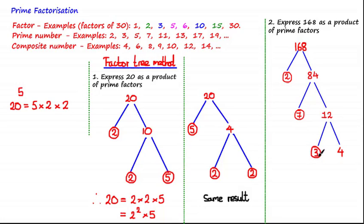7 is circled as it's a prime number. 2 factors which multiply to give 12 are 3 and 4. And 3 is a prime number, so it's circled. And lastly, 4 can be written as a product of 2 and 2, which are both prime numbers. And as all the edges of the branches are circled, it means that we've come to the end of the process.